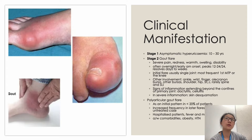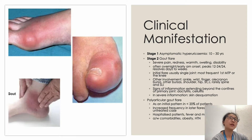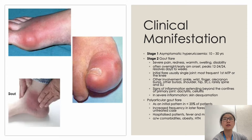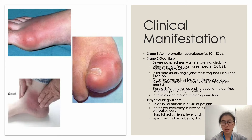The most common site is the first MTP joint as a single joint flare, but gout can affect other joints including the ankle, wrist, fingers, bursas, and occasionally the spine. The inflammation can be severe, extending to surrounding areas appearing as dactylitis or almost like cellulitis. In severe cases, skin ulceration can occur. Polyarticular gout can also present as a first flare, though less commonly, mainly in hospitalized patients, and can mimic sepsis with fever and constitutional symptoms.